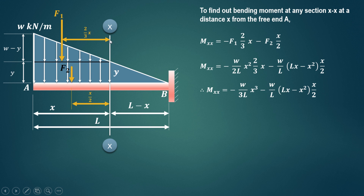Taking moments about section XX, both forces produce anticlockwise moments, which are negative. So bending moment equals minus F1 times 2X/3 minus F2 times X/2. Substituting F1 equals W/2L times X squared and F2 equals W/L times (LX minus X squared), and simplifying, we get: minus W upon 3L times X cubed minus W upon L times (LX minus X squared) times X/2. This is the general expression for bending moment.